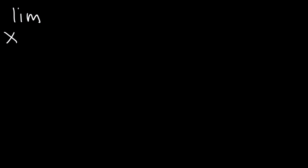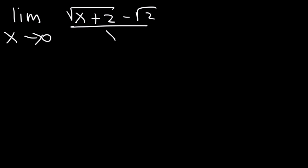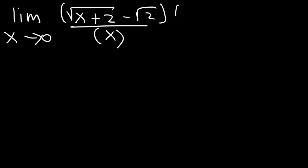Let's work on another problem. What is the limit as x approaches 0 of the square root of x plus 2 minus square root of 2, divided by x? We can't plug in 0, otherwise we'll get a 0 on the bottom. So we've got to get rid of that x. Just like before, we're going to multiply the top and the bottom by the conjugate of the numerator.